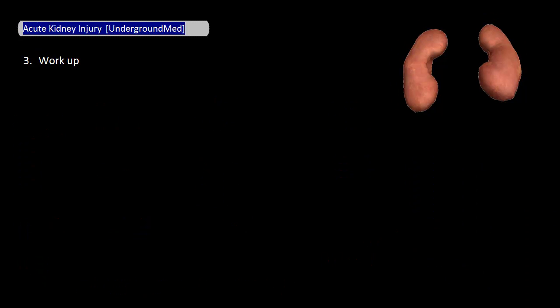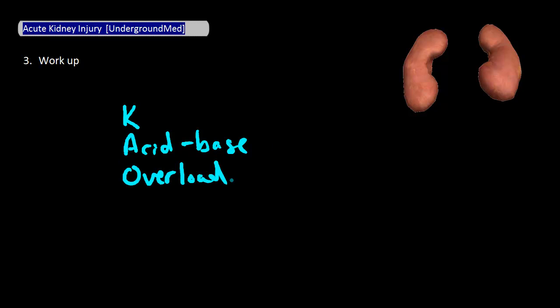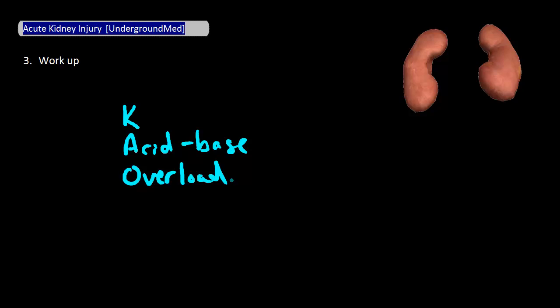Before we end, there are some important things to watch out for, as patients with AKI can get pretty sick. Watch their K levels, as increased potassium promotes arrhythmia. Monitor their acid-base status, as they can become severely acidotic. Also monitor for signs of fluid overload. If your patient decompensates enough, they could require dialysis — I'll go over the indications for dialysis in another video. Here are our take-home points for this video, along with our sources. Thanks for watching.